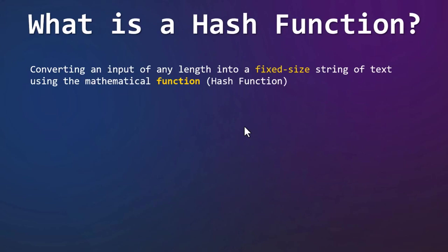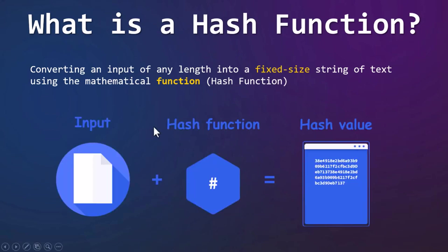Before diving deep into the practical usage of John the Ripper, let's first understand what hashing is and what a hash function is. Hashing is the process of converting an input of any length into a fixed-size string of text using a mathematical function called the hash function — that is, any text, no matter how long, can be converted into a random combination of numbers and alphabets through an algorithm. The message to be hashed is called the input, the algorithm that encrypts the string into a hash is called the hash function, and the output is called the hash value.